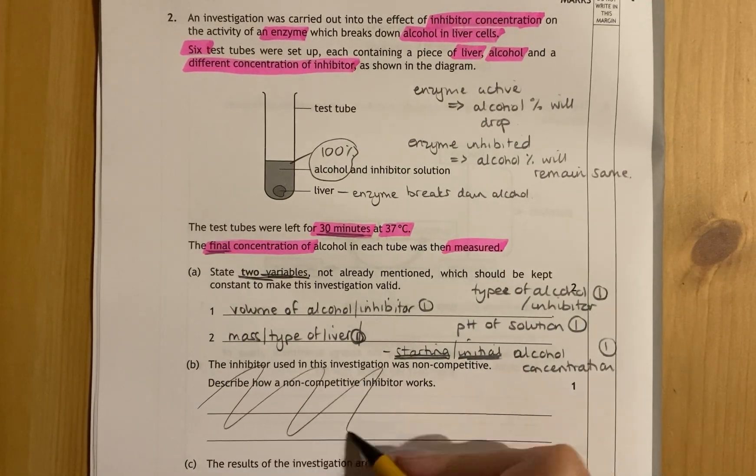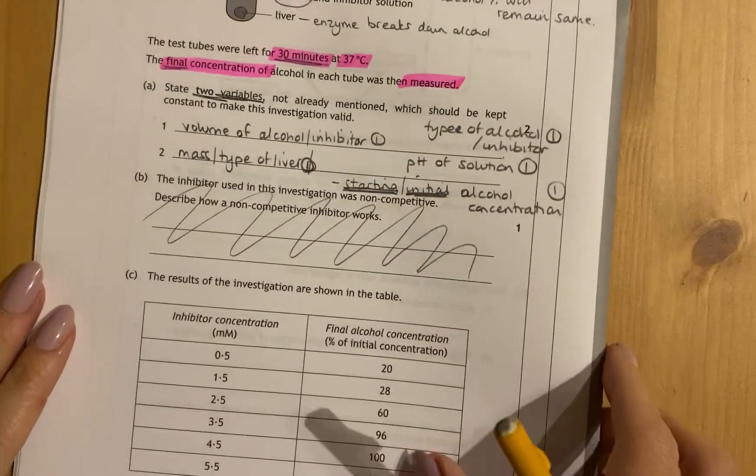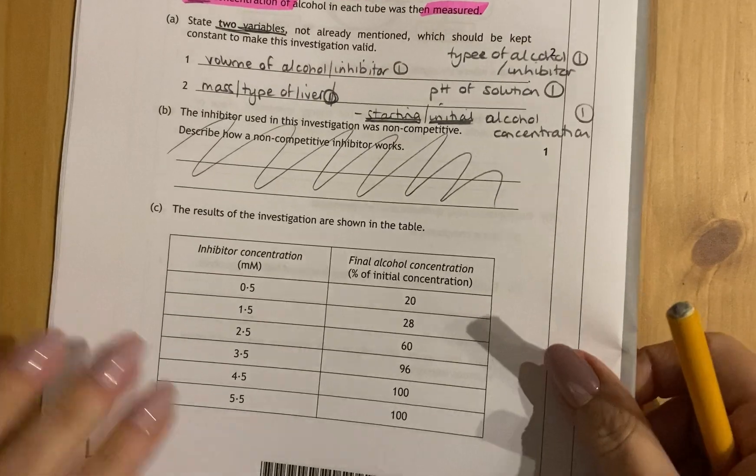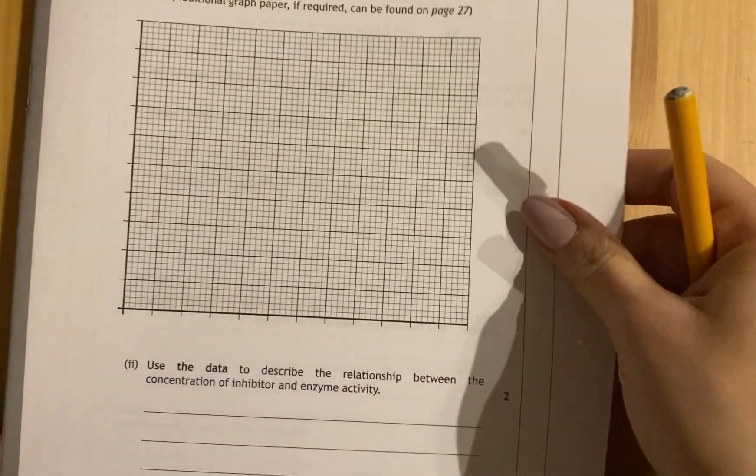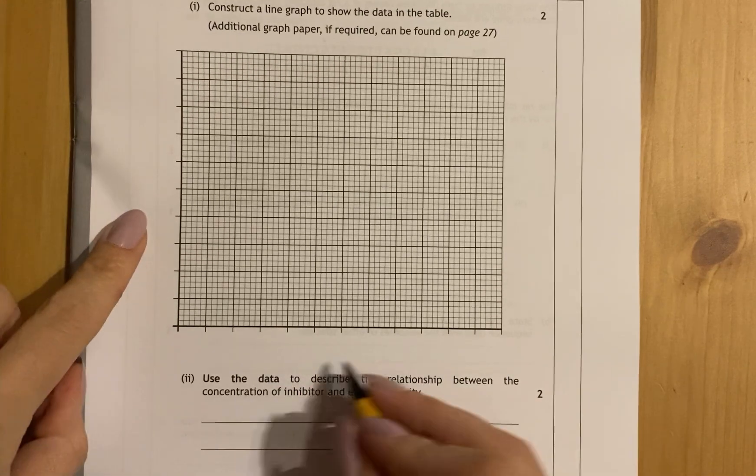Part B is about inhibitors, so that's a knowledge question, so I'll leave that out. The next part is plotting a graph.